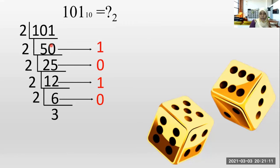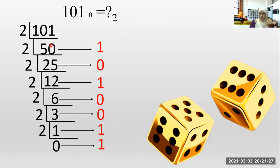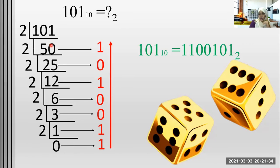How many twos in six? Three times, no remainings. How many twos in three? One time. Any remainings? Yes, one. How many twos in one? Zero. How many remainings? One. So the answer is 1, 1, 0, 0, 0, 0, 1, 0, 1 base two.